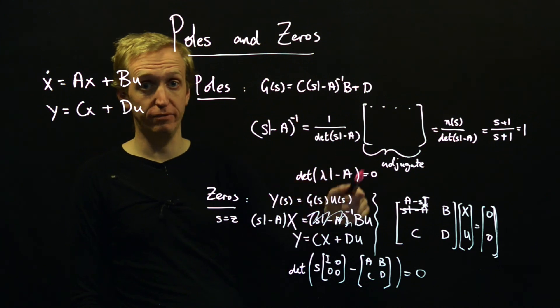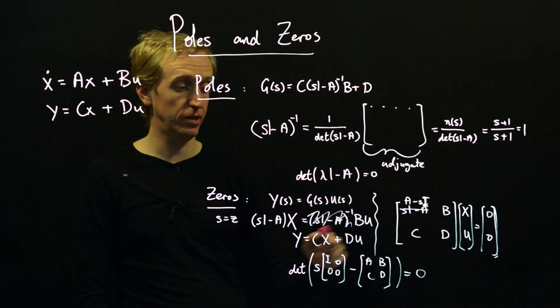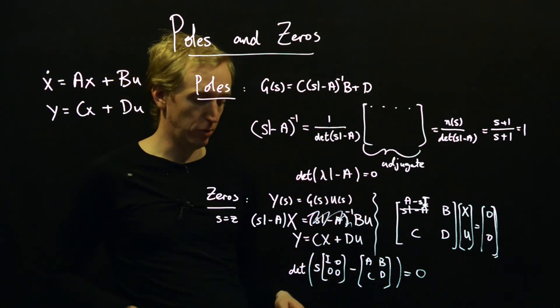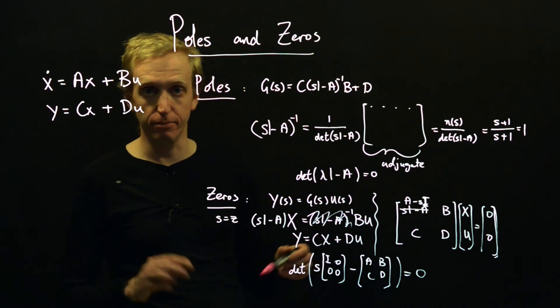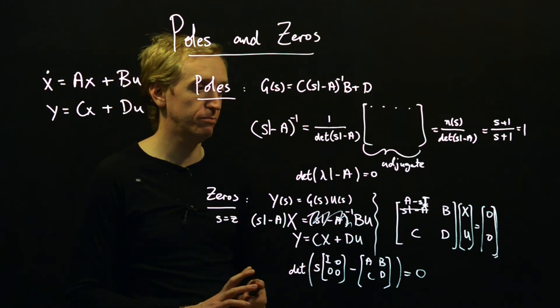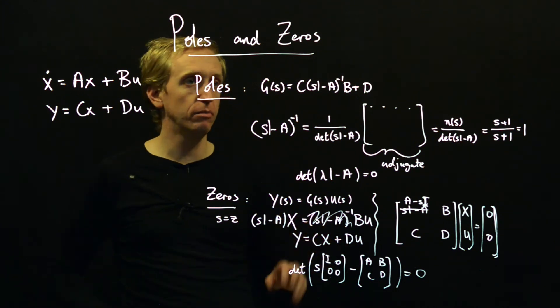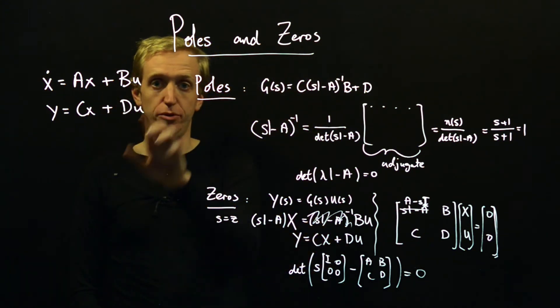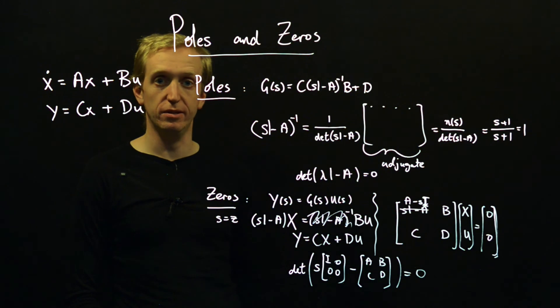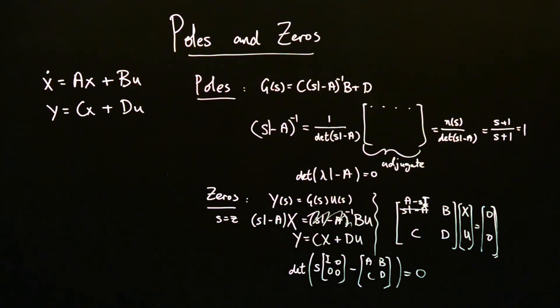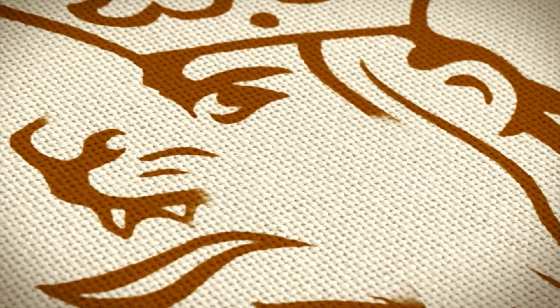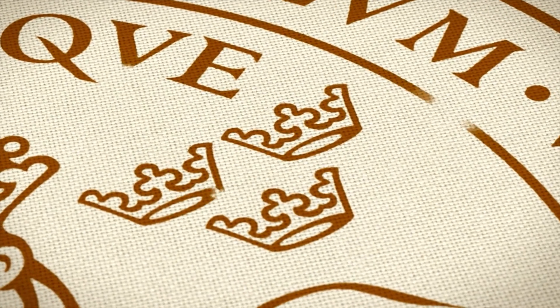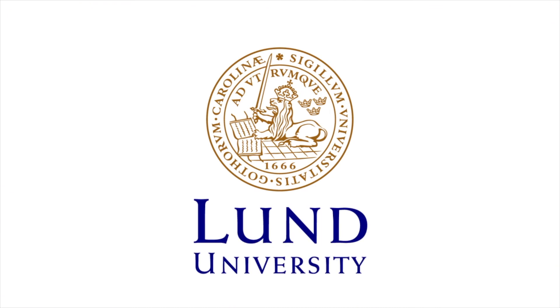And so the zeros of a transfer function are given by solving a generalized eigenvalue problem in terms of A, B, C and D. Poles, you solve a normal eigenvalue problem. Zeros, you solve a generalized eigenvalue problem. And if you go away to MATLAB or whatever, there will be some built-in function for solving generalized eigenvalue problems. But there you have poles and zeros understood in terms of state space matrices. Well, we'll see you in the next video.